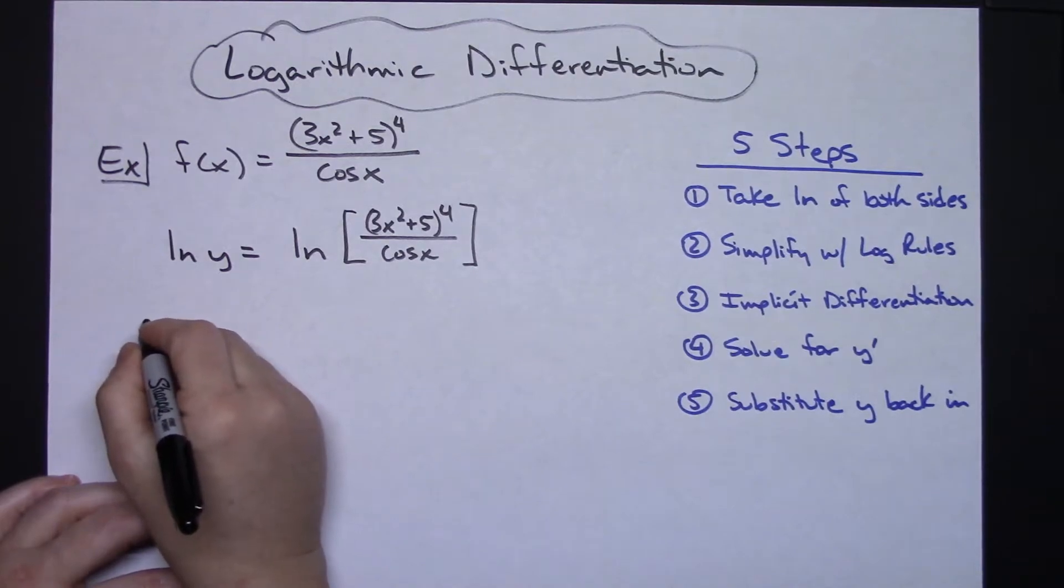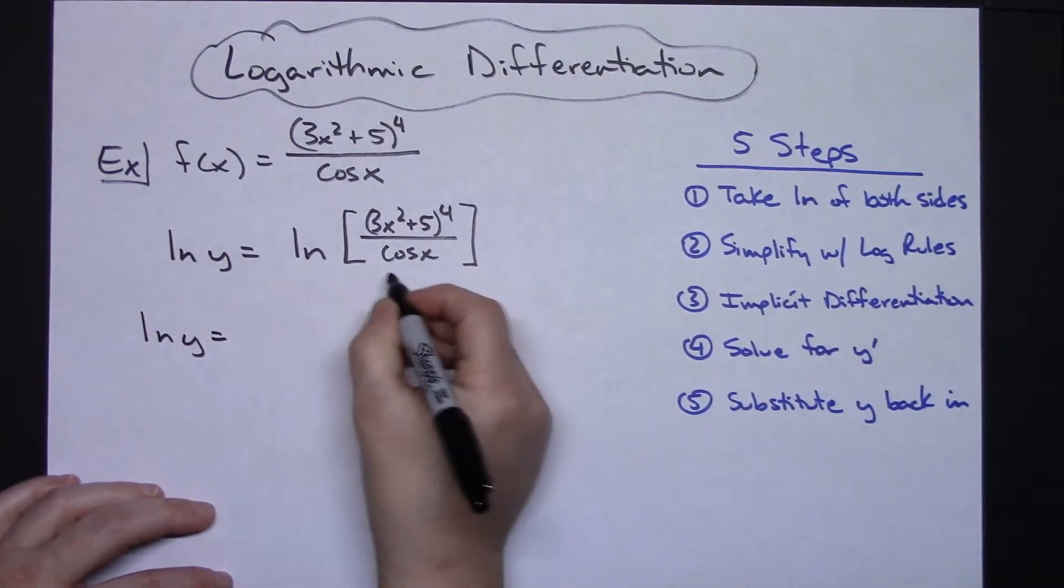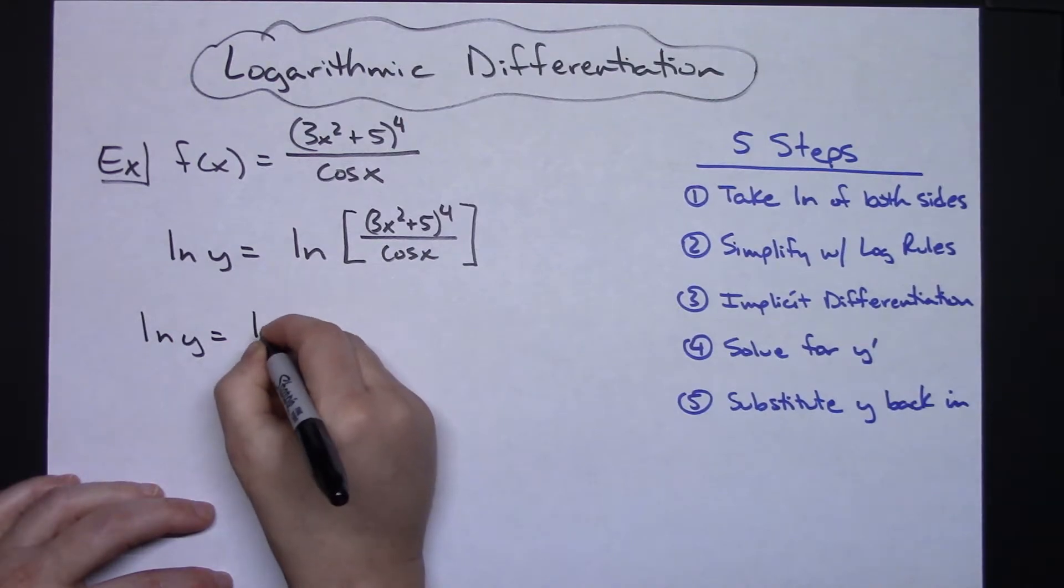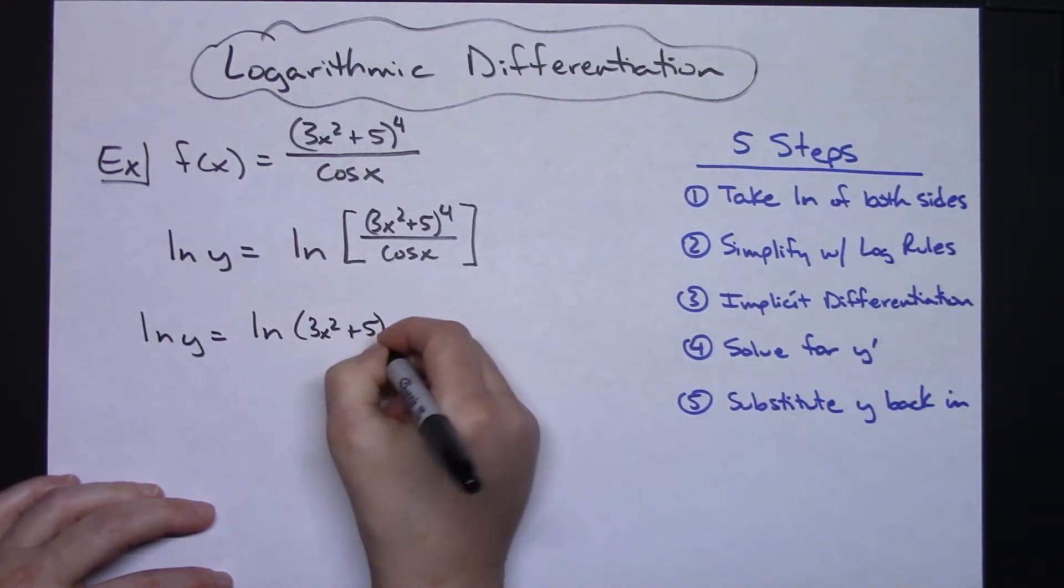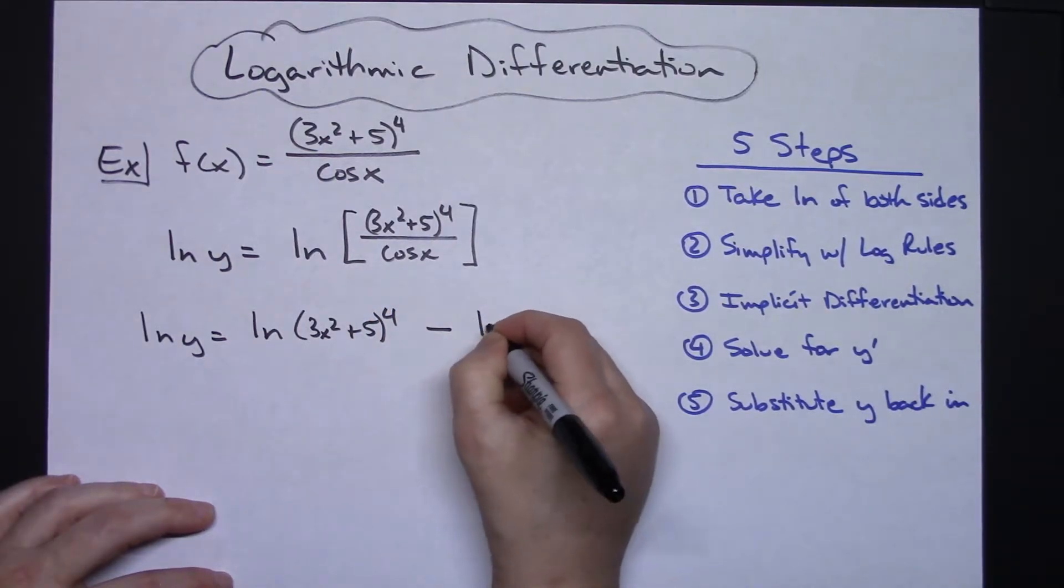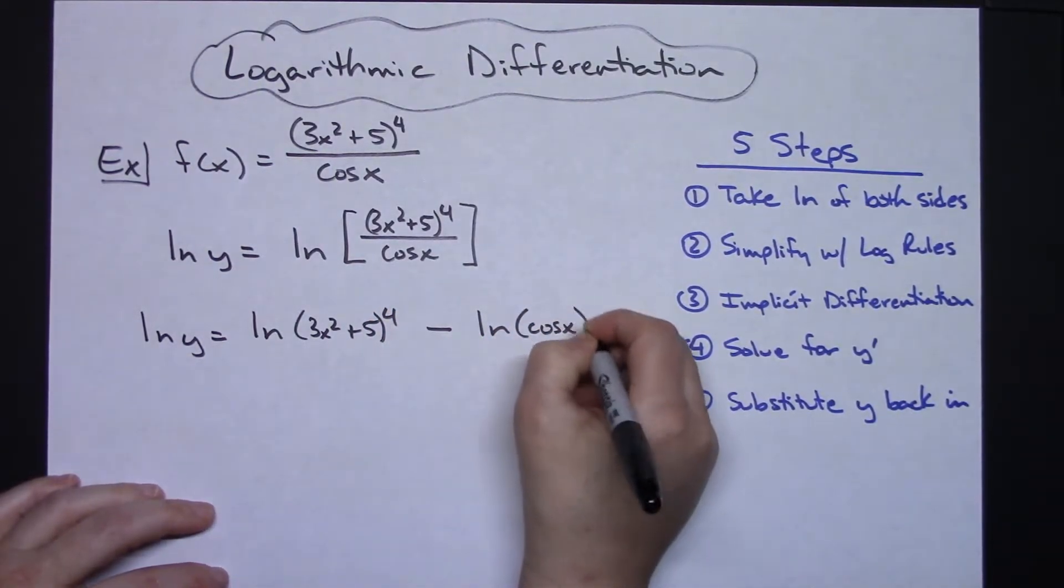So that's what I'm going to do. I'm going to have the natural log of y equals, subtracting these two, I will have the natural log of 3x squared plus 5 to the 4 minus the natural log of cosine x.